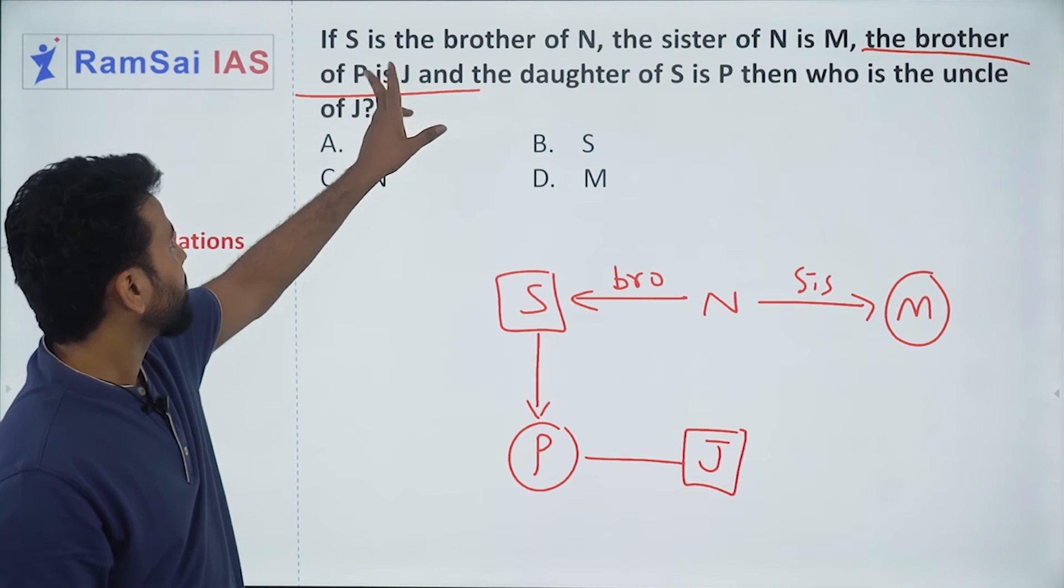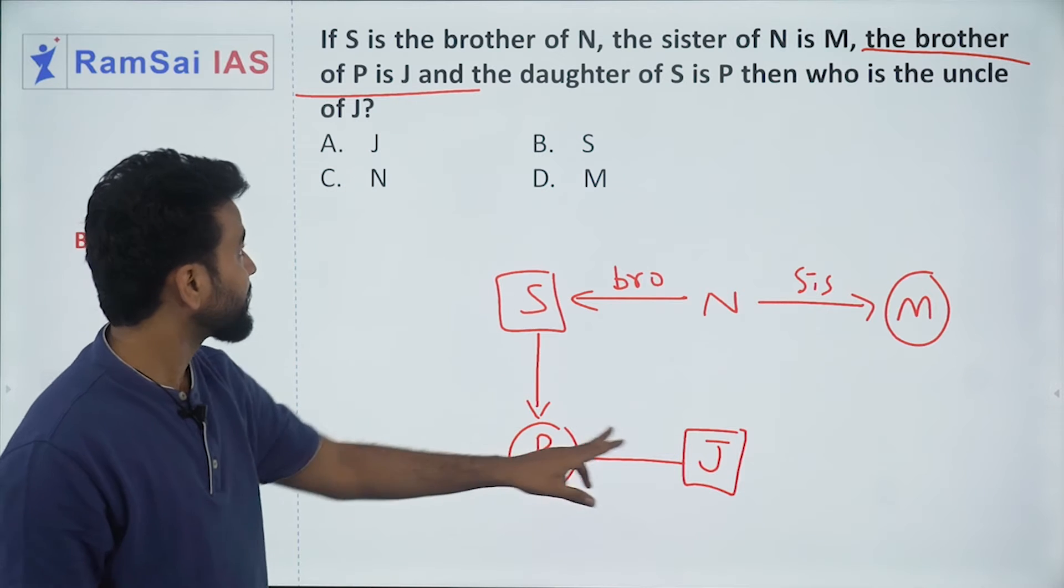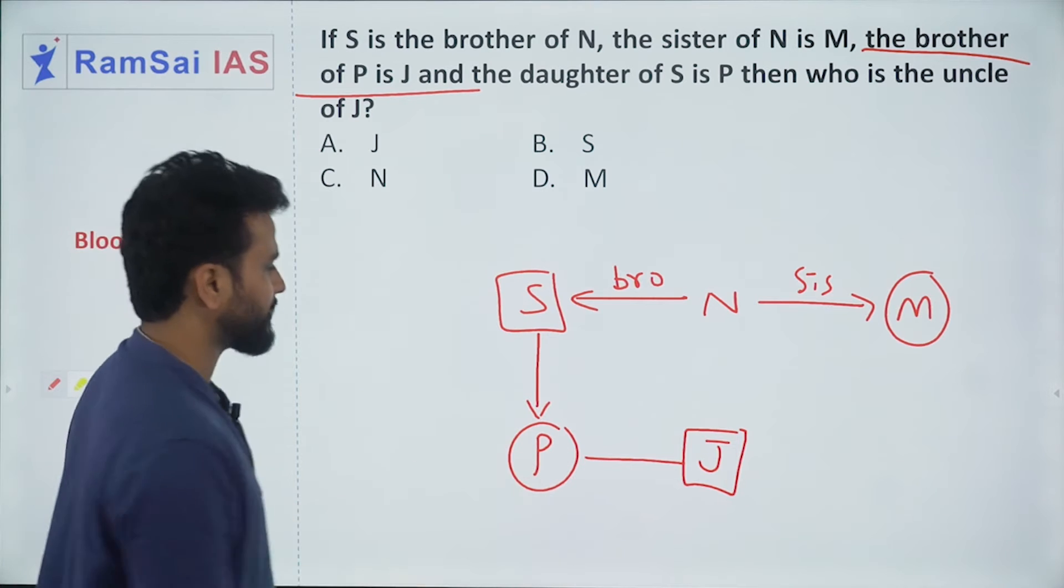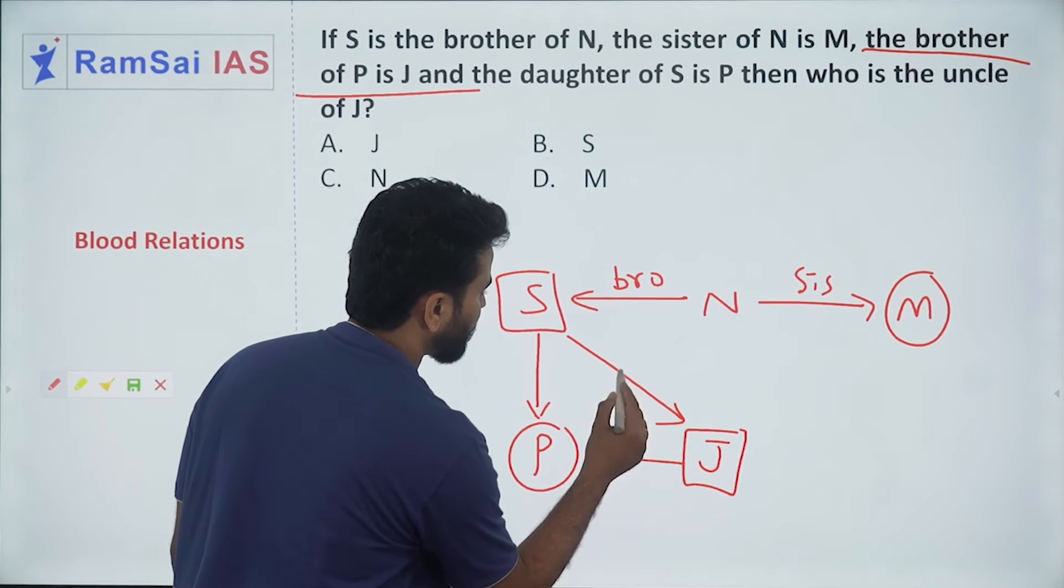Is it clear? See, P is J's brother. Sorry, J is P's brother and P is daughter of S. So indirectly, J is son of S.